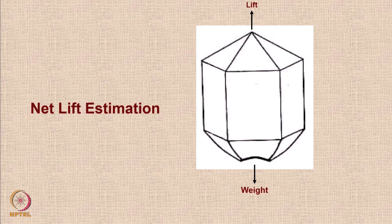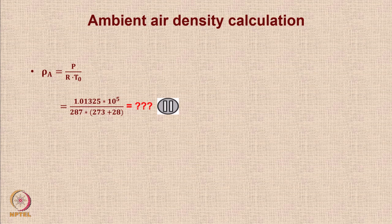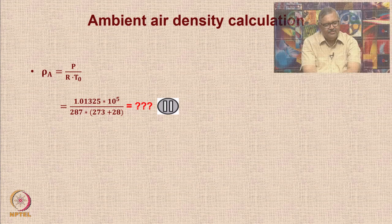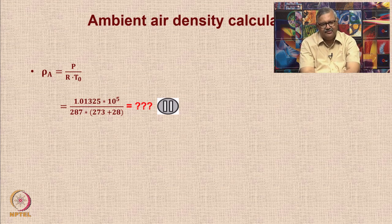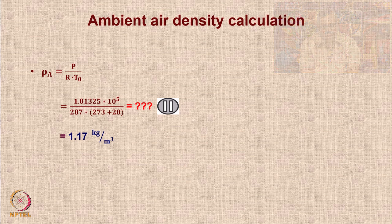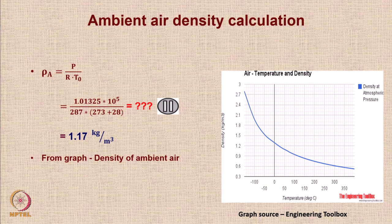For net lift estimation of this 0.65 cubic meter balloon, we first calculate the density of ambient air using ρ = P / (RT₀). This formula gives the air density as a function of ambient pressure, gas constant, and temperature. If you prefer, you can also determine this value graphically from a chart — I would recommend using both methods to validate your calculations.